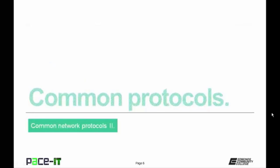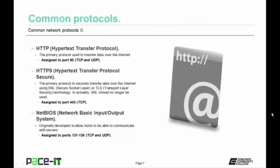Let's start with HTTP, Hypertext Transfer Protocol—the primary protocol used to transfer data over the internet, assigned to port 80, using either TCP or UDP. Then there's HTTPS, Hypertext Transfer Protocol Secure—the primary protocol to securely transfer data over the internet using TLS technology, assigned to port 443, using TCP. Then there's NetBIOS, Network Basic Input Output System, originally developed to allow hosts to communicate with servers, assigned to ports 137 through 139, using TCP or UDP.